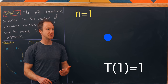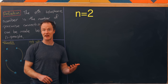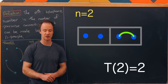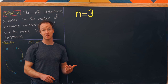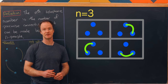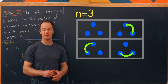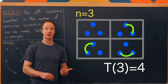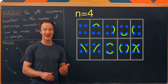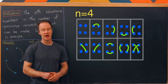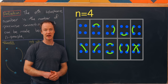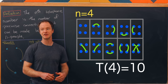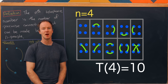For n equals two, we have the empty connection where no one is connected, but we could also connect the two people, giving two possibilities. For n equals three, there are four total types of connections: the empty connection, and then three depending on who you leave out. For n equals four, there are ten possibilities: no one connected, six ways to connect two people, and three ways to connect two pairs.